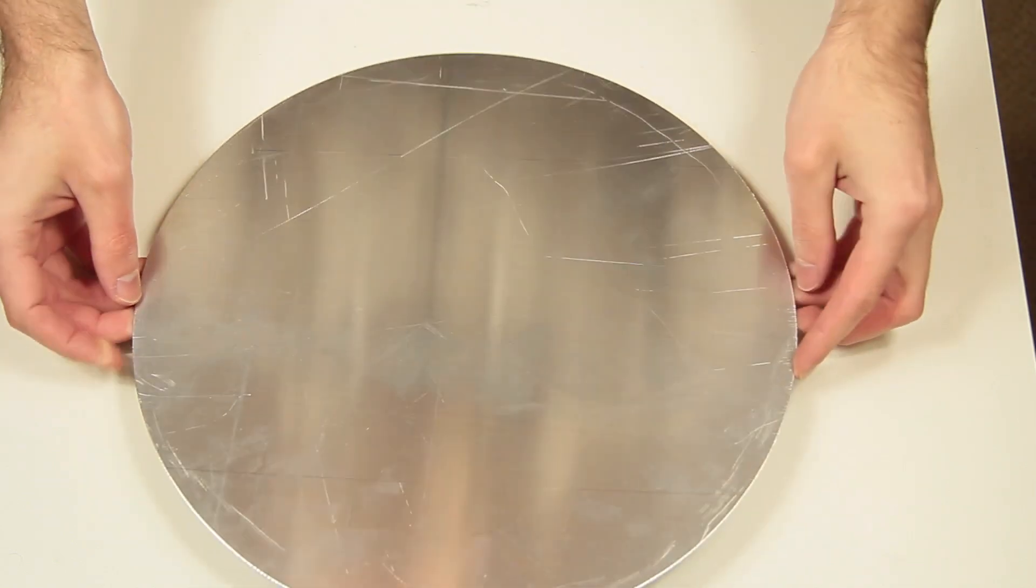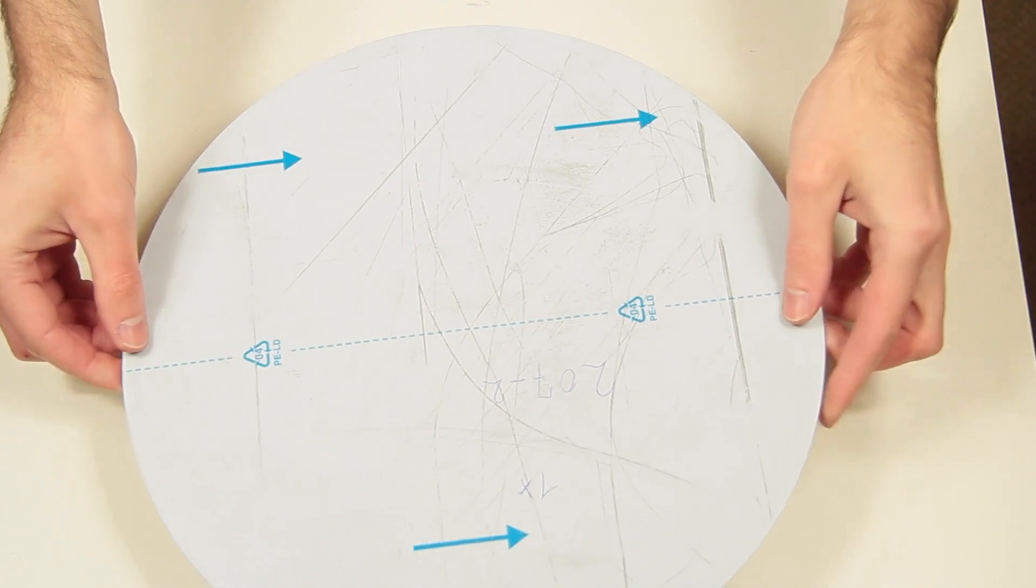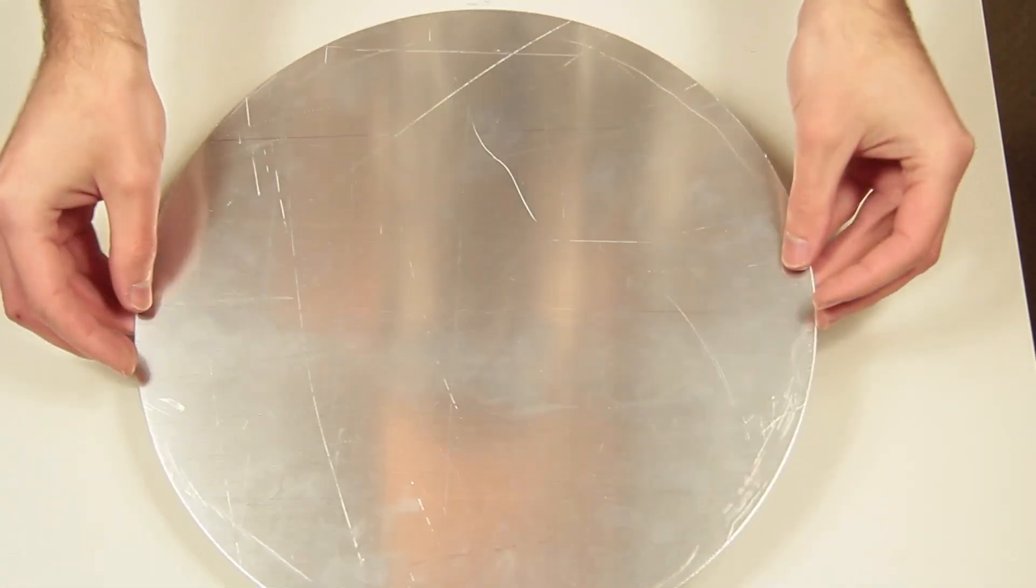The main component of the pad will be an aluminum disc. The disc is from a German online store specialized in metal sheet cutting.